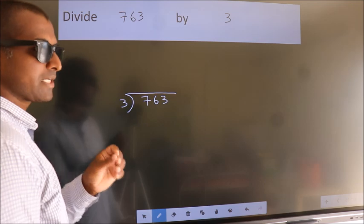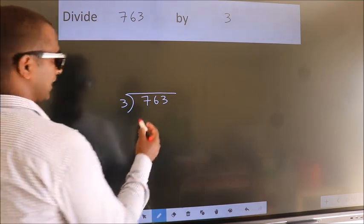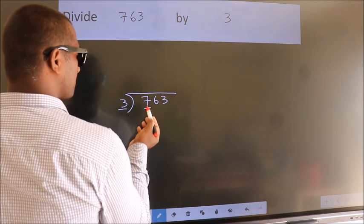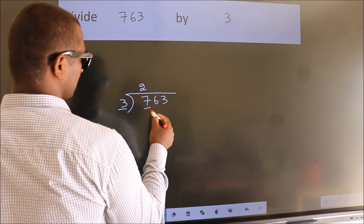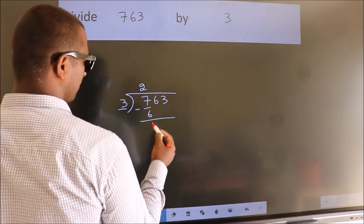This is your step 1. Next, here we have 7, here 3. A number close to 7 in the 3 table is 3 times 2, which is 6. Now, we should subtract. We get 1.